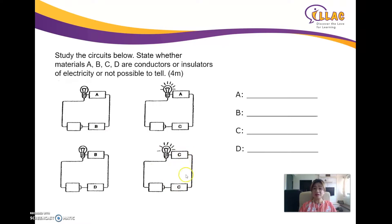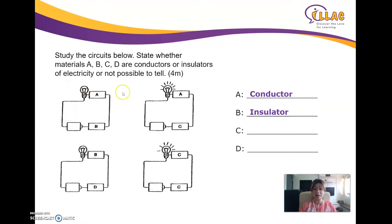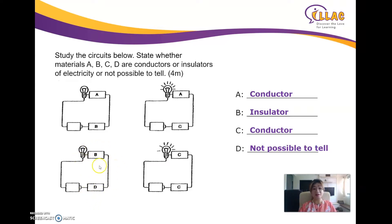B is not a conductor — there is no B here separately, but B is an insulator. So if I put B in the circuit, the circuit will be open and not light up. What is D then? D will be not possible to tell, because D is in the same circuit as B, which is an insulator, and I can't tell whether D is a conductor or insulator due to the presence of B.